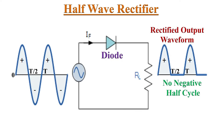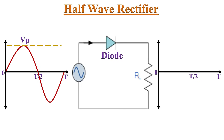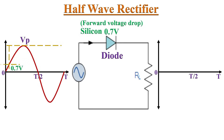So far in our analysis we have assumed that the diode in the rectifier circuit is an ideal diode. But now let's consider the forward voltage drop across the diode. Let's assume that this diode is a silicon diode, so it has a forward voltage drop of 0.7 volts. Now the diode will get forward biased only when the input voltage is more than the threshold voltage of 0.7 volts.